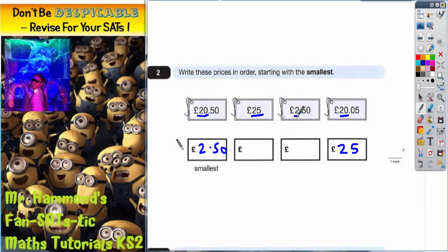Now what I might as well do is cross off the ones that I've already used, so I've already used £2.50, I've already used £25, and I've only got two left to fill in these two boxes here.